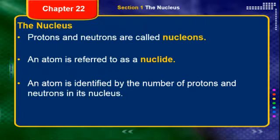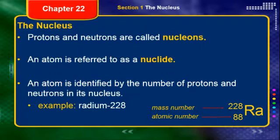An atom, or specifically an isotope, is going to be identified by the number of protons and neutrons in its nucleus. We can identify just the atom by the number of protons, but if I want to get specific and tell you what version of that atom it is, I need to tell you the mass number, which includes the number of neutrons. Here are the two ways you can represent nuclides. We have hyphen notation — for example, Radium-228. Radium is the element; we find it on the periodic table to know its atomic number. The mass number, 228, is given after the hyphen — the sum of all nucleons in the nucleus.